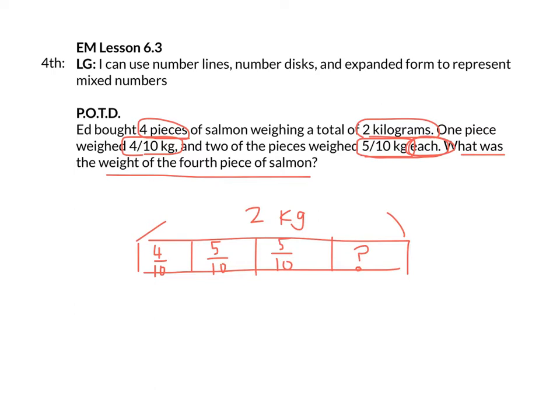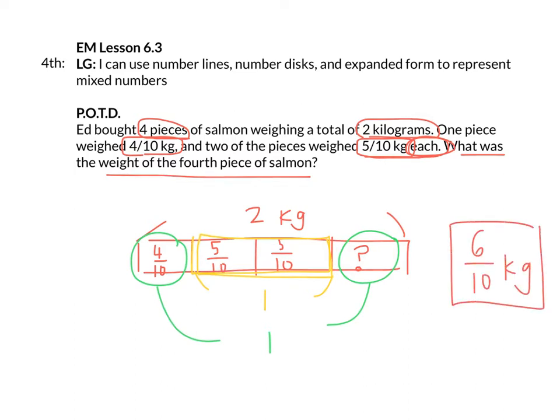Does anyone see anything we could do first to kind of help us out, to make it a little bit easier? Keisha? Five tenths times two. I see right here 5/10 times two. What do we know that equals? One kilogram, right? Which means that 4/10 plus this one must also equal one kilogram. So you just have to think to yourself, 4/10 plus what will equal one kilogram? Everyone? Six tenths. So the answer is 6/10 of a kilogram. So always look for patterns like that to help you out.